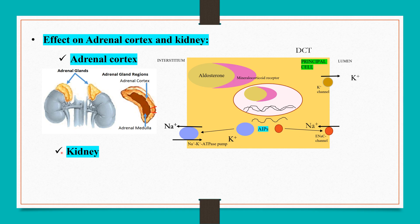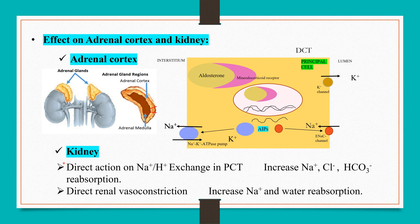Effect on the kidney: angiotensin 2 acts directly on sodium-hydrogen ion exchange in the proximal convoluted tubule and increases sodium reabsorption along with chloride and bicarbonate reabsorption. It also produces a direct vasoconstriction effect and increases sodium and water reabsorption.